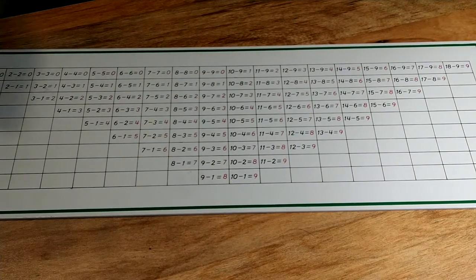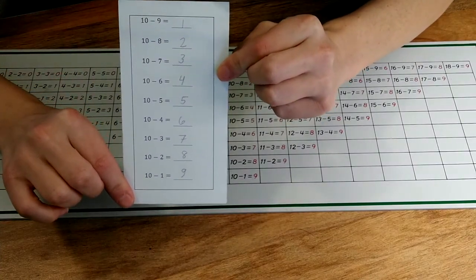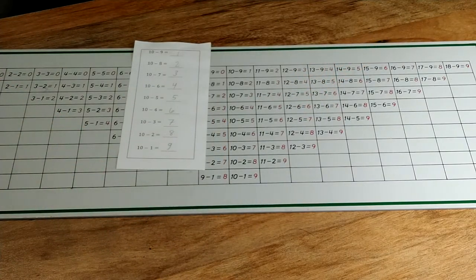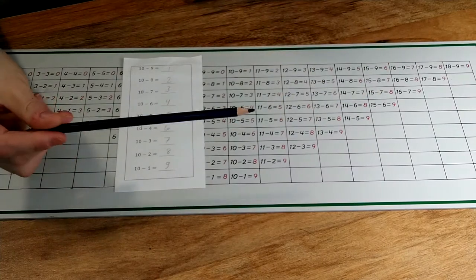So you will need the completed subtraction strip board work. You could do it one page at a time or the whole booklet at a time, and a colored pencil. I chose blue.